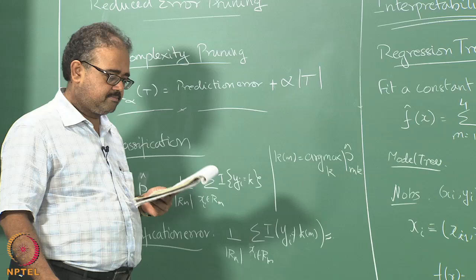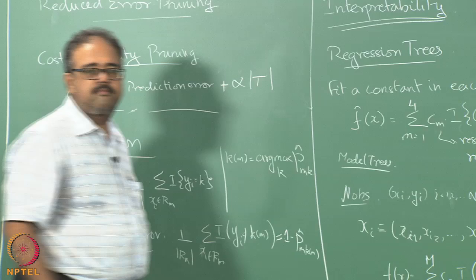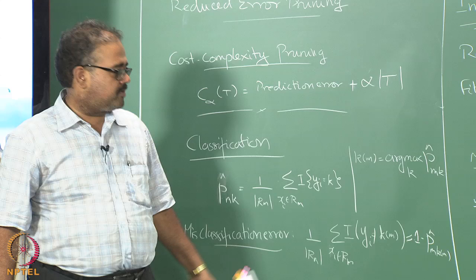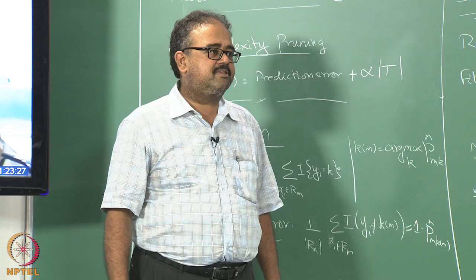The simplified form is 1 minus P_M,K(M). The fraction of data points correctly classified is P_M,K(M) because the true label is K of M and I am outputting K of M, so they are correctly classified. The fraction misclassified is therefore 1 minus P_M,K(M). That is the misclassification error.